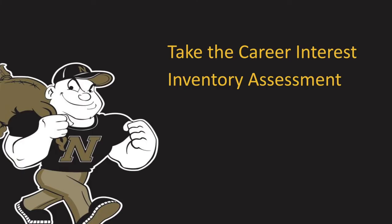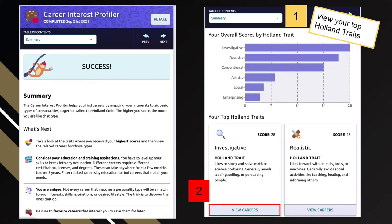Now let's pause this presentation to take a couple minutes to take the career interest profiler assessment. Success! You're done! The career interest profiler helps you find careers by mapping your interests to six basic personality types called the Holland Code.